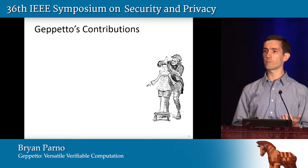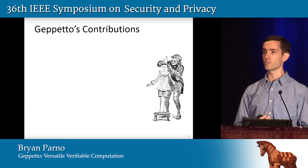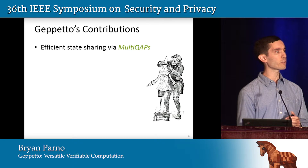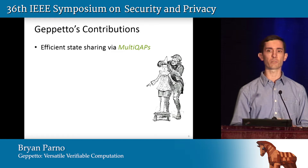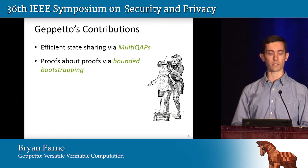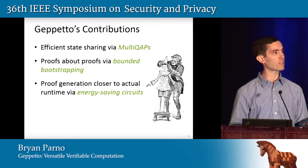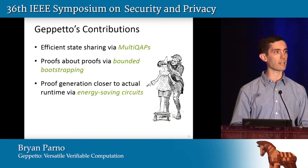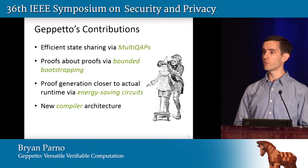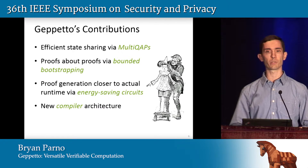With Geppetto we've tried to look at ways to reduce the cost of generating the proof as well as increasing the flexibility of the prover for various classes of computation. We've developed a new encoding we call multi-QAPs to enable computations over shared state. We've optimized bounded bootstrapping for proofs about proofs. We've brought the cost of generating the proof closer to the cost of actual runtime through energy-saving circuits. And to support this new versatility we've built a new compiler architecture that scales higher and enables more flexibility than previous compilers.